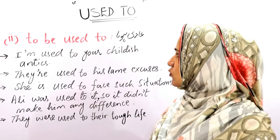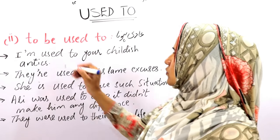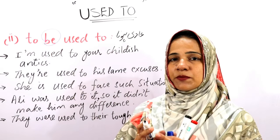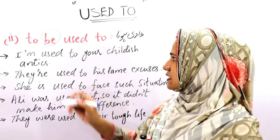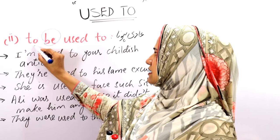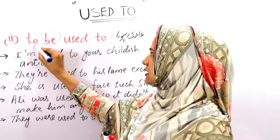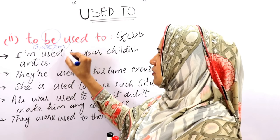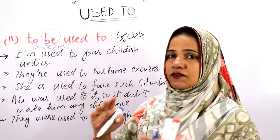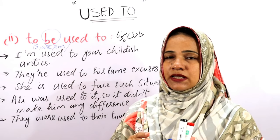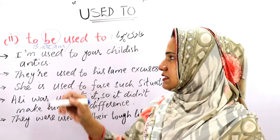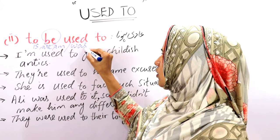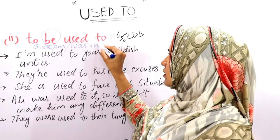Here I want to discuss the 'be' part of this expression. 'Be' can be in present tense — it will be 'is,' 'are,' or 'am.' And if we talk about 'be' in the past tense, it can be 'was' or 'were.'